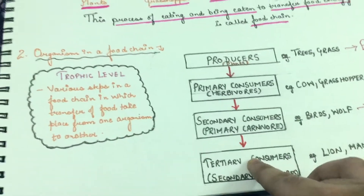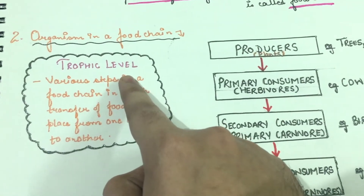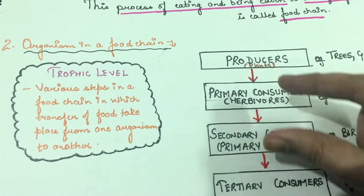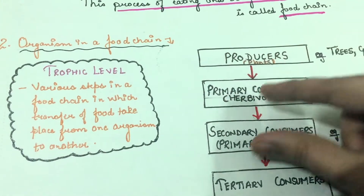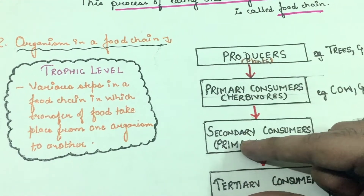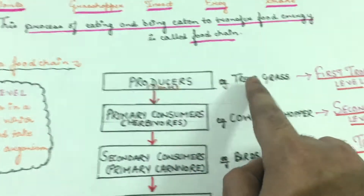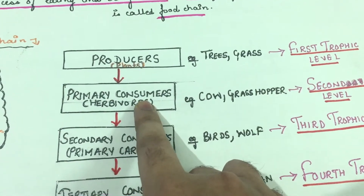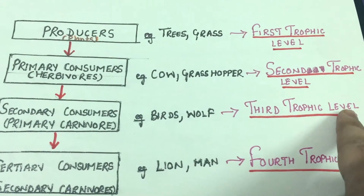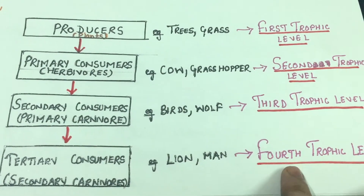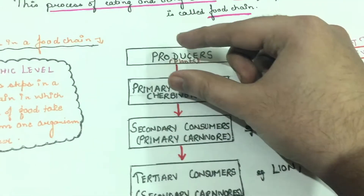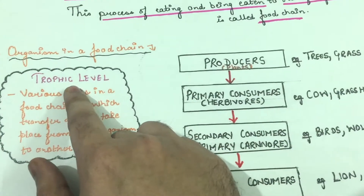Now let us understand what are trophic levels. Various steps in a food chain through which transfer of energy takes place from one organism to another are called trophic levels. Producers are the first trophic level, primary consumers are the second trophic level, secondary consumers are the third trophic level, and tertiary consumers are the fourth trophic level.